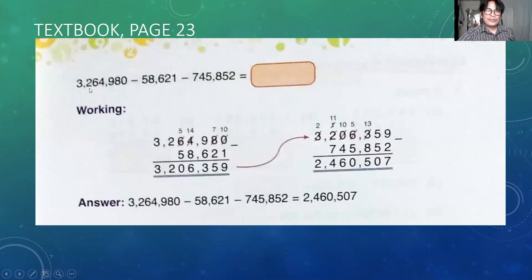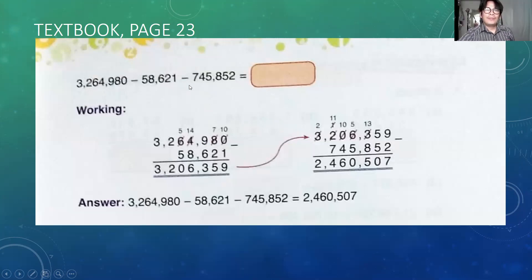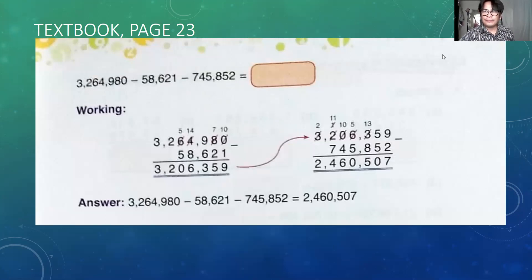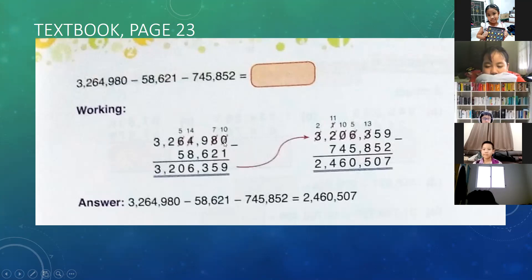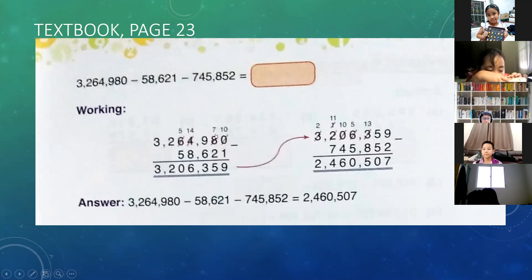The numbers are: 3,264,918 minus 58,621 minus 745,852. Are you still listening? I hope so. So: 0 becomes 10, 10 minus 1 equals 9. 8 becomes 7 because we borrowed 1, so 7 minus 2 equals 5. We didn't borrow, so 9 stays 9. 9 minus 6 equals 3. 4 cannot be subtracted by 8 because 4 is smaller than 8, so 4 becomes 14. 14 minus 8 equals 6.